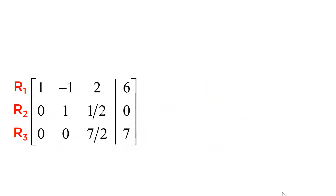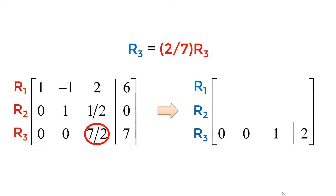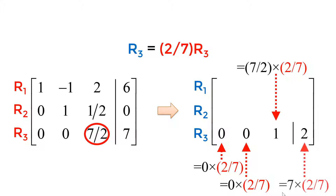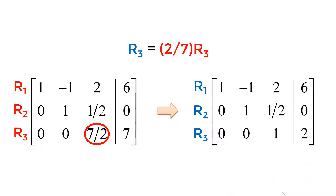My next step is to make my 7/2 into 1. Since I have 7/2, I will multiply 2/7 on each element in the third row. The new elements will be 0, 0, 1, and 2. I keep all elements in the first two rows the same. You successfully reduced 7/2 to 1.